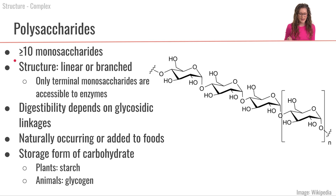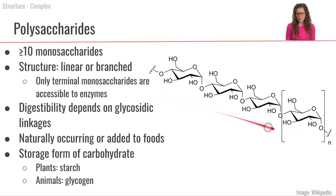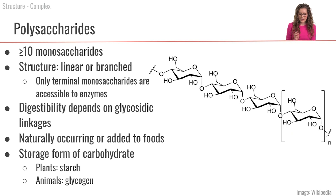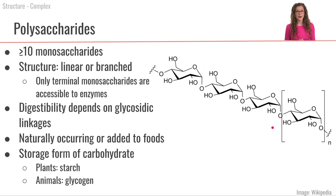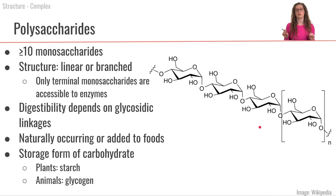Now we move on to polysaccharides — poly meaning many — so polysaccharides are more than ten monosaccharides bound together. They can have varying structures: either linear or branched, using different types of glycosidic bonds. An important point is that only the terminal ends of polysaccharides are accessible to enzymes; enzymes cannot perform hydrolysis on monosaccharides in the middle.